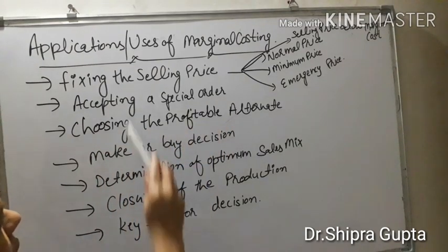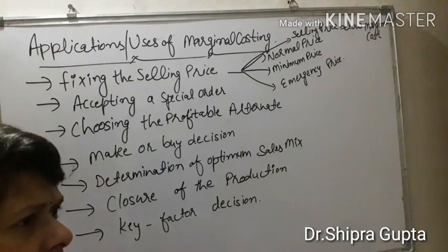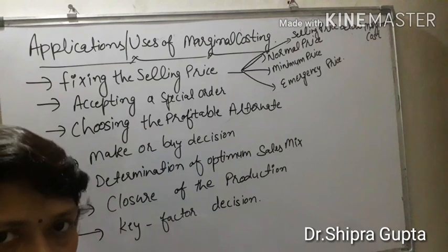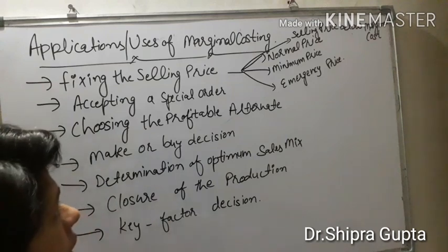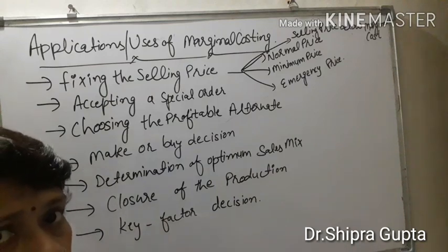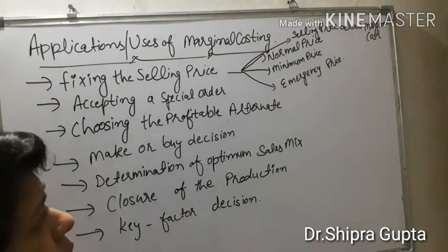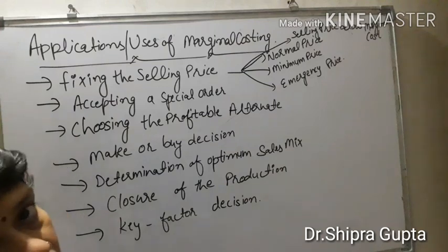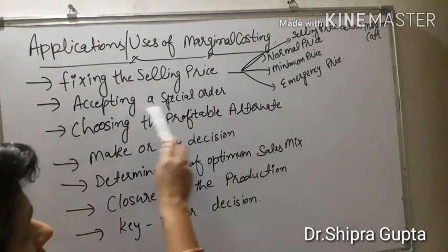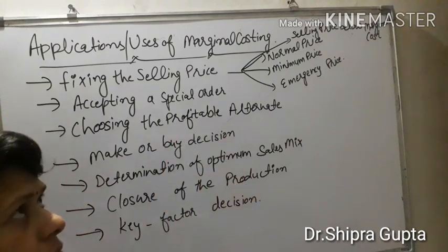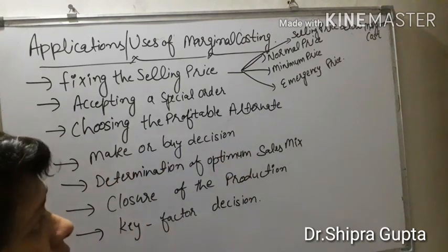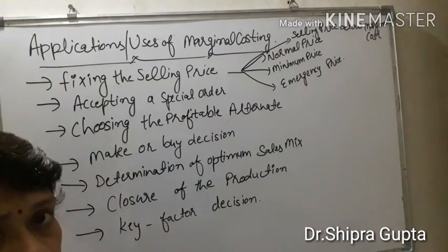The second application is accepting a special order. In this situation, when we have already covered our fixed cost and our total capacity is not used — capacity remains unutilized — we want to take another order. We only need to cover our variable cost and some other expenses in the form of profit, so we ignore fixed cost.